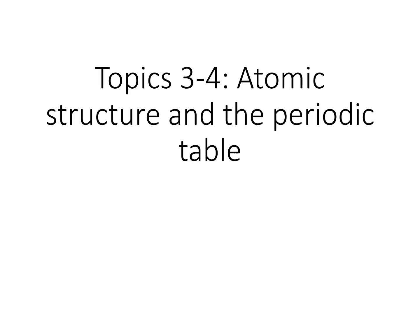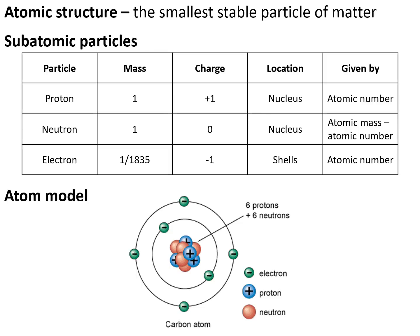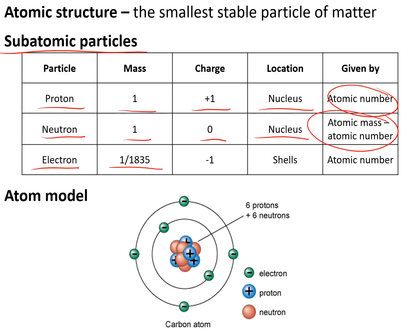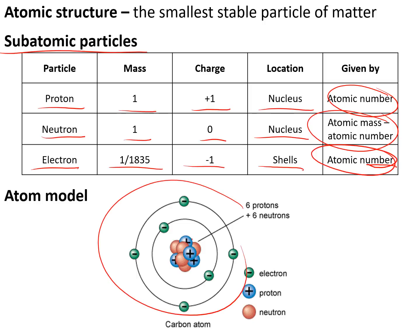Topics 3 to 4: atomic structure and the periodic table. Atoms are the smallest stable particle of matter and are made of subatomic particles. Protons have a mass of 1, a charge of +1, are found in the nucleus, and are given by the atomic number. Neutrons have a mass of 1, a charge of 0, are also found in the nucleus, and are given by atomic mass minus atomic number. Electrons have a mass of 1/1835, a charge of -1, are found in shells around the nucleus, and are also given by the atomic number. The nucleus sits in the middle with electrons in shells around it.